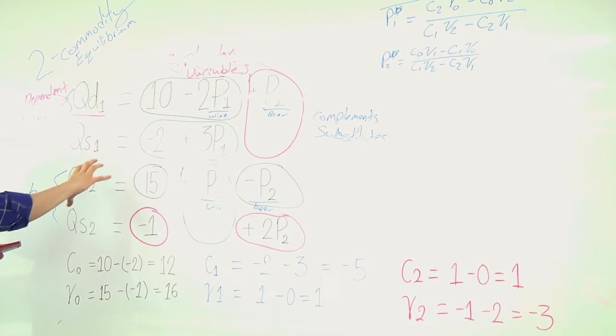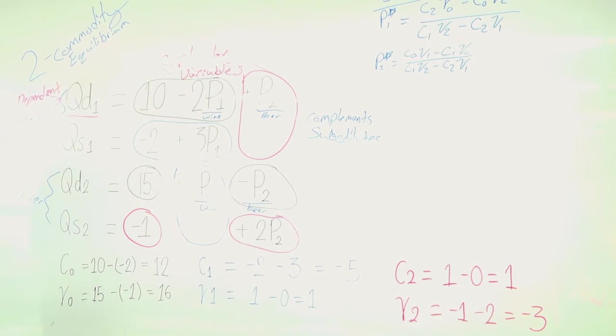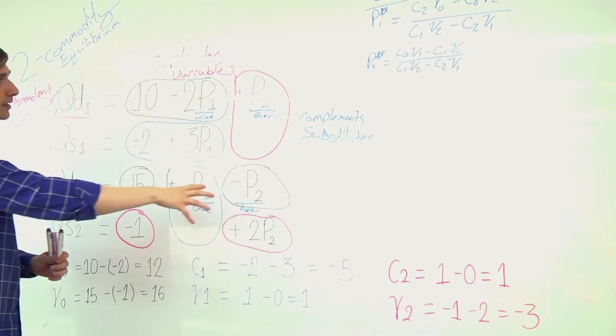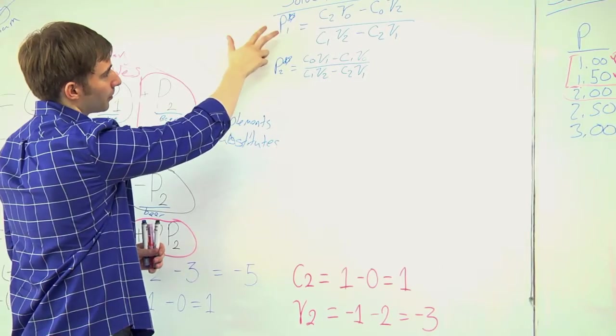So this is the format, the structure for how we get those six variables. Once we have those six variables, we're going to plug them in and solve for P star.